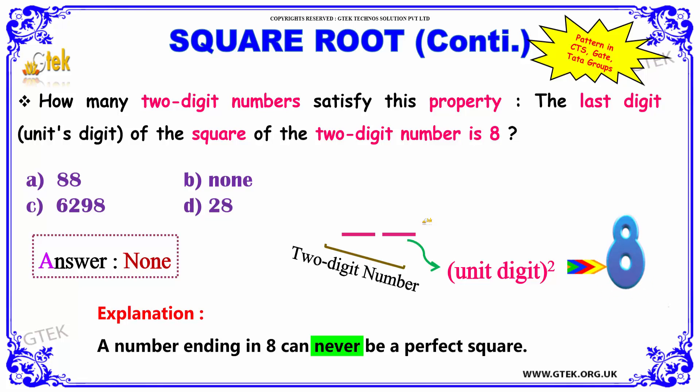A number ending in 8 can never be a perfect square. So none of these will be the answer. That is option B. None will be the answer.